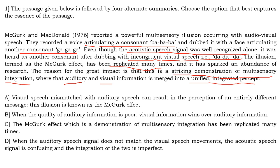Now we go to the options. Option A: visual speech mismatched with auditory speech can result in the perception of an entirely different message. This illusion is known as the McGurk effect. The passage talks about visual speech mismatched with auditory speech — correct — and can result in the perception of an entirely different message. This is a good answer with no inconsistencies with the passage. It captures almost all the things given in the passage correctly.